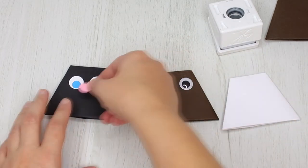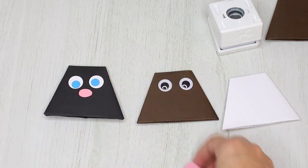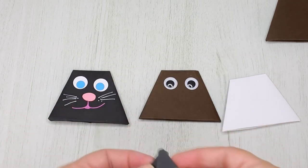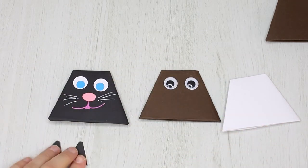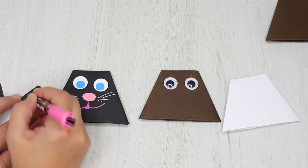Then cut out the nose, draw the mouth, whiskers, or any other details you want to add to your animal. Cut out the ears from the same colored card.